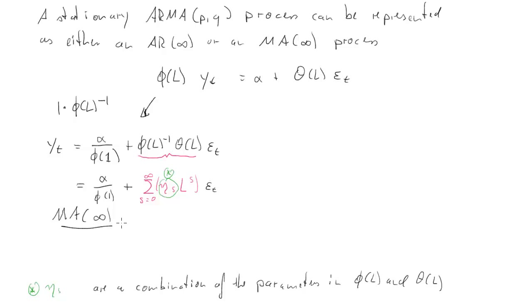If we go back to the ARMA(p,q) process and apply a different operation, let's say we multiply with theta(L) inverse, the inverse of the theta polynomial, the MA lag polynomial, what we get is theta(L) inverse times phi(L) times y_t on the left-hand side, and on the right-hand side, we get alpha divided by theta(1), so we have a 1 again replacing the L, because there's only a constant in this term, plus epsilon_t.